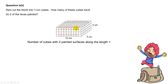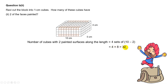Along the length, the cubes with 2 painted surfaces are here, here, and of course the back also has a row here and another row over there. These cubes have 2 faces painted. You don't count the corner cubes because those actually have 3 faces painted, while the flat face cubes only have 1 face painted. So the number of cubes with 2 painted surfaces along the length will be 4 times 8 — because in one row we have 8 cubes — so 4 rows gives 32 cubes.